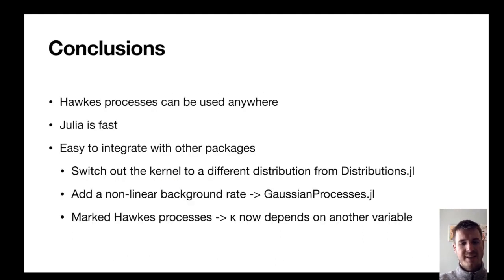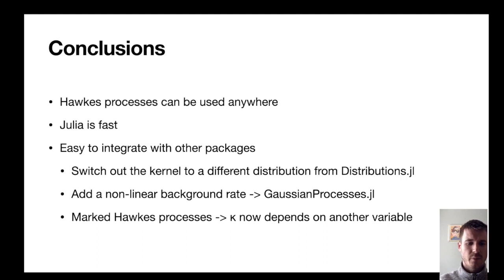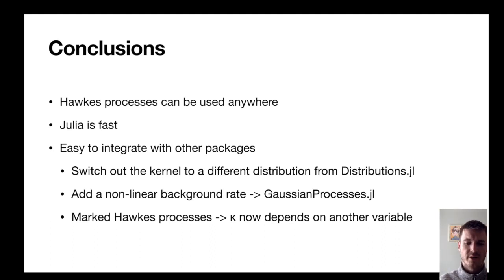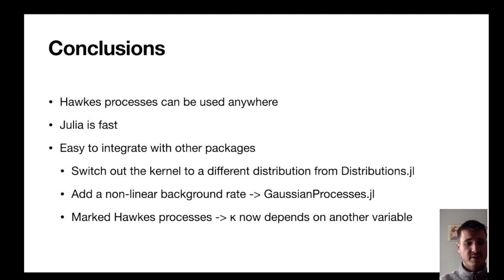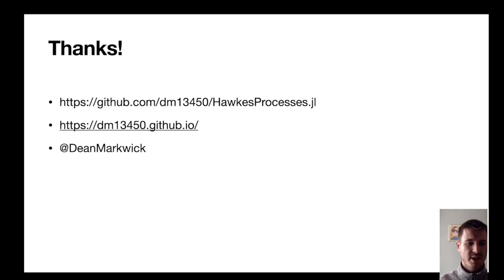Hopefully you now have an idea of what a Hawkes process is, how it can be applied to many different problems, and how Julia is well suited to these types of problems given its speed and composability with other packages. You could switch out the kernel to a different distribution such as the log-normal using the Distributions package, adapt the background rate to a non-linear one using Gaussian processes, or consider marked Hawkes processes where kappa depends on another variable. All of these can be easily done given the composability of Julia. The package is hosted on GitHub at the URL shown, and you can find more from me on my website or Twitter. Thank you.